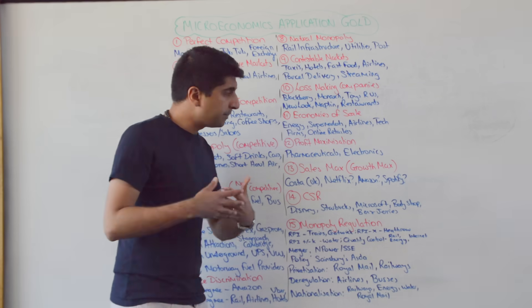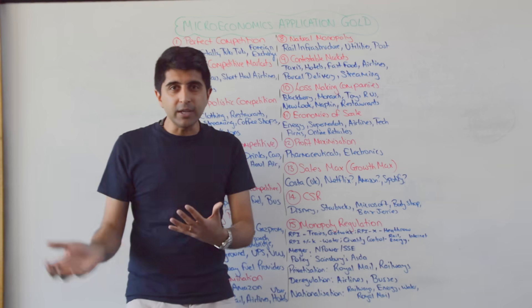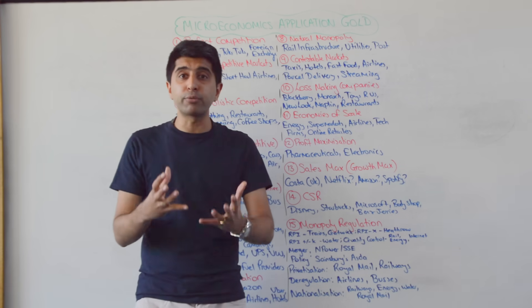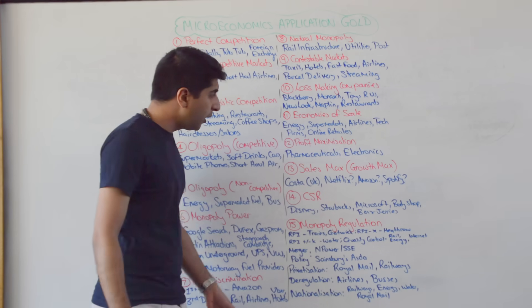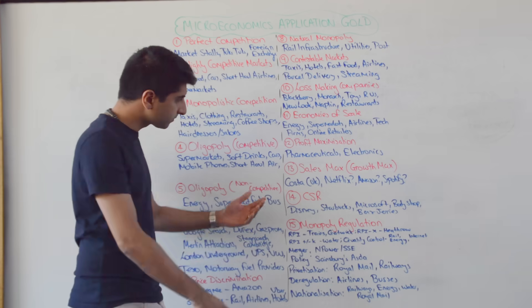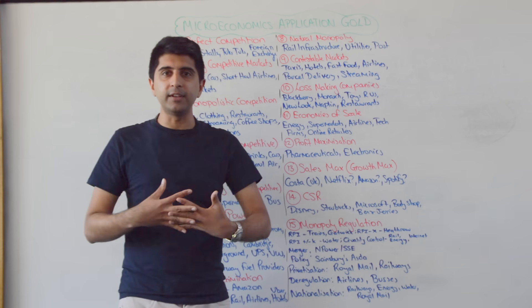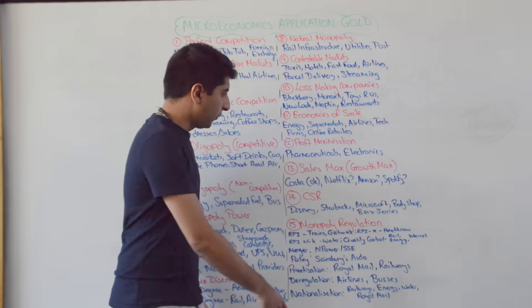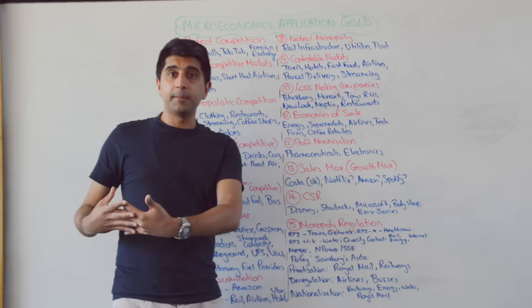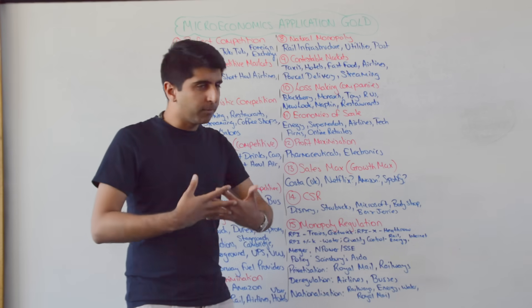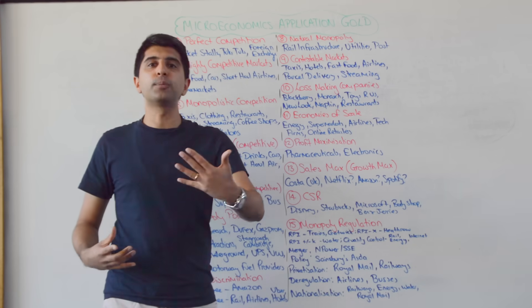Let's now move into objectives of firms. Profit maximization: pharmaceuticals and electronics look to profit max because reinvestment into innovation, R&D, and brand new products is very important — part of the business model in these markets. What about sales maximization or growth maximization? Costa in the UK is looking to rival Starbucks by having more stores, developing brand loyalty and awareness, and then looking to profit max. Netflix, Amazon, and Spotify were old examples of growth maximizing — trying to get us to have accounts with them, develop loyalty, and then change their objective, arguably now shifting towards profit max.